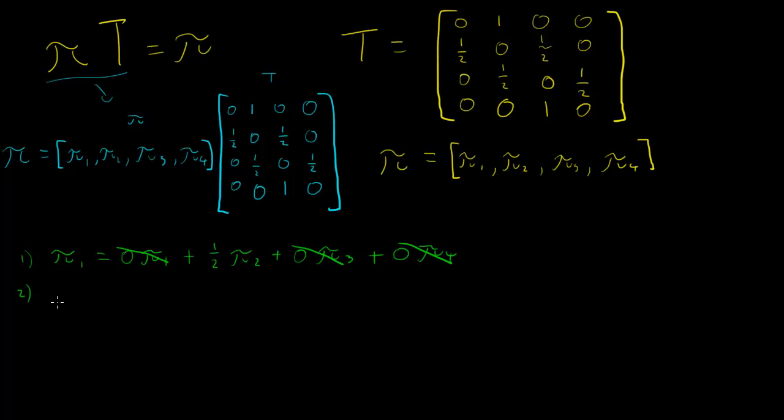We've got three more equations to write out. Pi 2 is equal to, and this time I'll just write out the ones that are non-zero. So pi 2 is equal to 1 times pi 1 plus half of pi 3. Pi 3 is equal to half of pi 2 plus pi 4. Pi 4 is equal to half of pi 3.